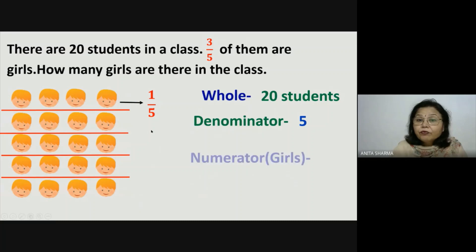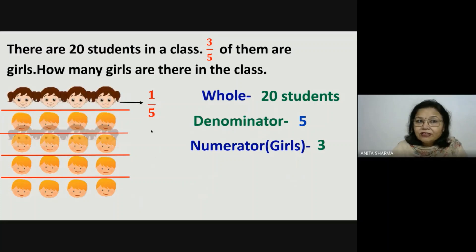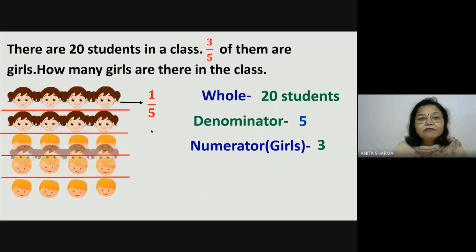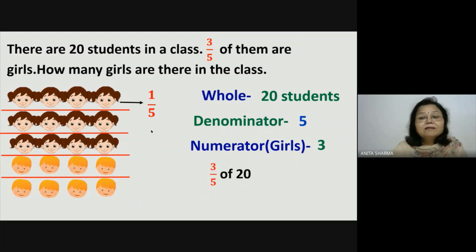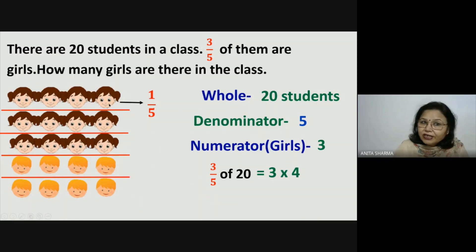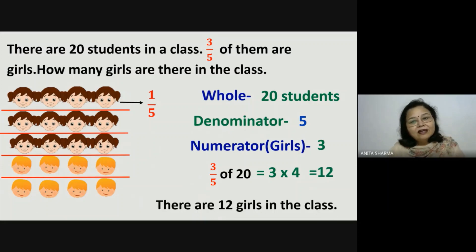So now what is numerator for girls? Means in 3 parts there are girls, so numerator is 3. Now let's see how many girls are in 3 parts. This is 1 fifth, this is 2 fifth, and this is 3 fifth. So 3 fifth of 20 means 3 times 4, which is 4 plus 4 plus 4, equal to 12 girls. So we can say that there are 12 girls in the class.